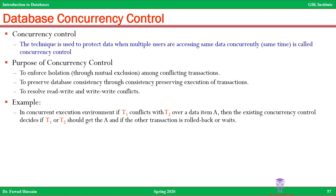To resolve read-write and write-write conflicts: if transaction T1 conflicts with T2 over a data item A — maybe a row or a set of rows in a given table — it means T1 and T2 are both trying to access A at the same time. The concurrency control decides if T1 or T2 should get A, and if the other transaction is rolled back or waits. T1 and T2 cannot both access A at the same time — one is given precedence and the other has to wait or abort and roll back.